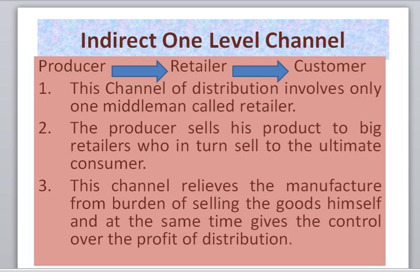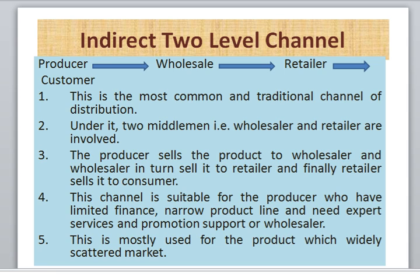Next is the indirect channel. The first type is the one level channel, where we take the help of one middleman, that is the retailer. For example, car companies sell to retailers and retailers sell to customers. This channel of distribution involves only one middleman called the retailer. The producer sells the product to big retailers who in turn sell it to ultimate customers. This channel relieves the manufacturer from the burden of selling the goods himself, while at the same time giving control over the distribution.